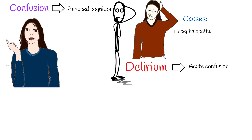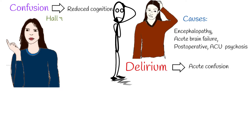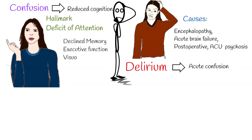Common causes of delirium are encephalopathy, acute brain failure, and postoperative or intensive care unit psychosis. Delirium can have many manifestations, but the most important hallmark is a deficit of attention, although all cognitive domains can be declined, including memory, executive function, visuospatial tasks, and language. Sometimes hallucinations or delusions can also occur.